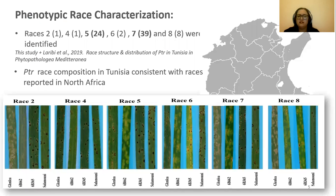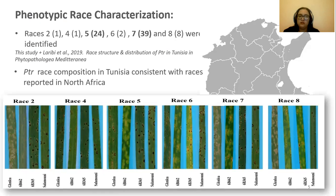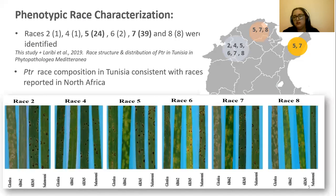The phenotypic race characterization of PTR isolates revealed the existence of six races: mainly races 2, 4, 5, 6, 7, and 8, with the predominance of races 5 and 7. PTR race composition in Tunisia is consistent with other races reported in North Africa. In fact, races 5 and 7 were found to be predominant in neighboring countries Algeria and Morocco.